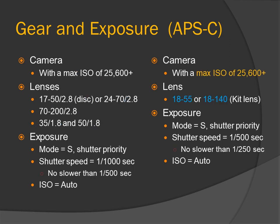On the right — kit lenses. Camera with a max ISO of 25600, and you will probably need to go up that high. The lenses are the kit lenses: the 18-55 and 18-140. Exposure: shutter priority. Shutter speed 1/500th of a second, no slower than 1/250th of a second. ISO: auto.